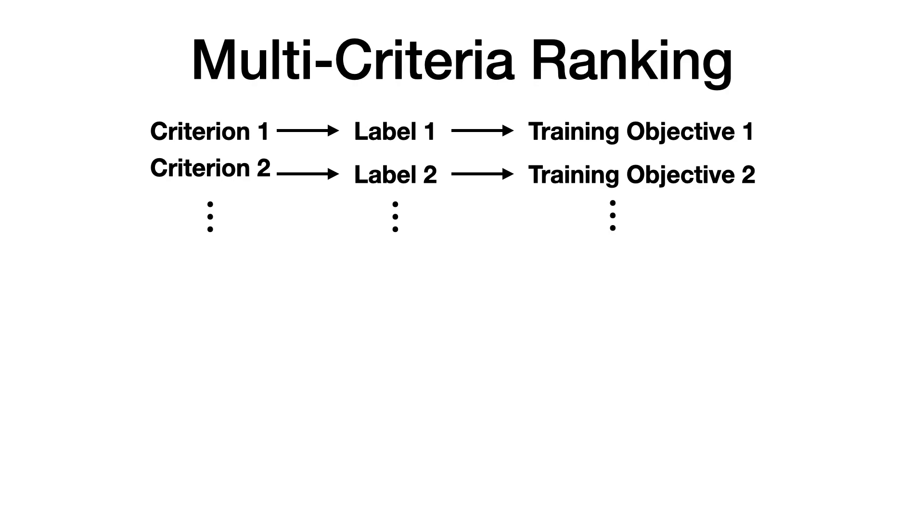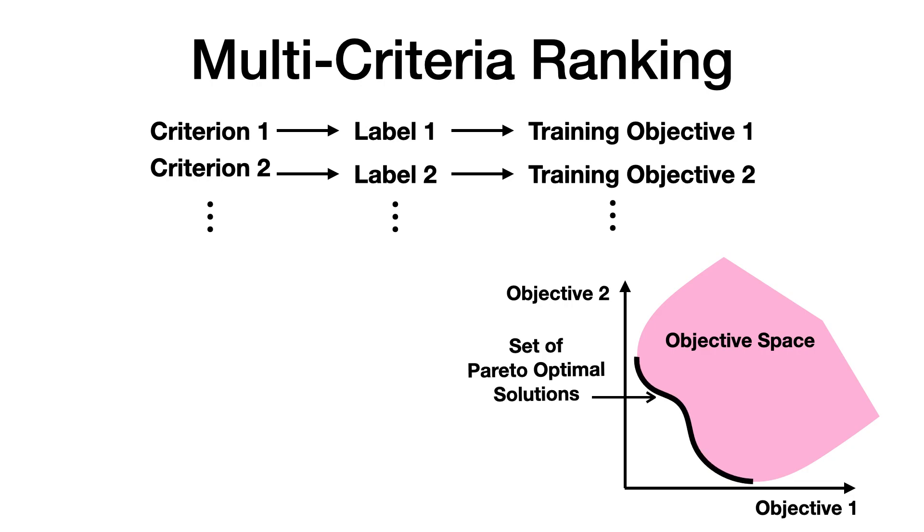The labels for different criteria lead to different training objectives. We ground our research on the theory of Pareto optimization where multiple optimal solutions exist that are not comparable, because each one captures a different trade-off between the objectives.